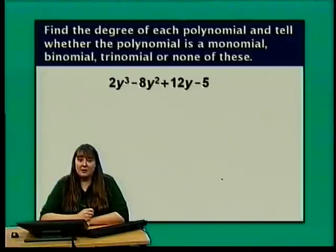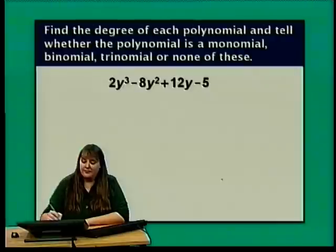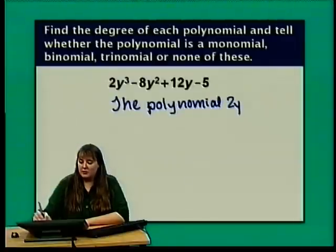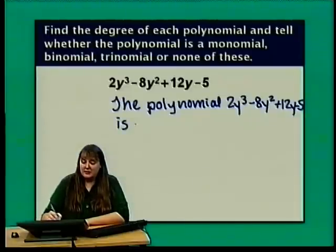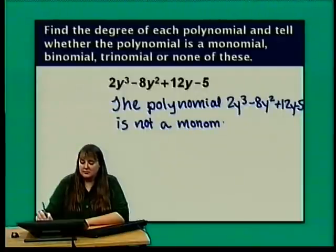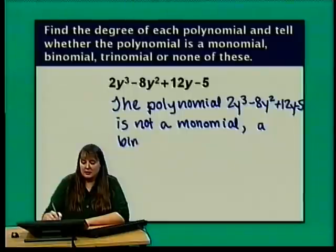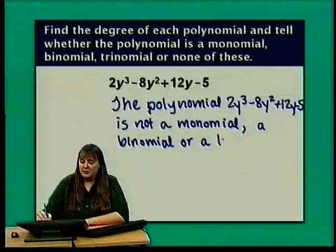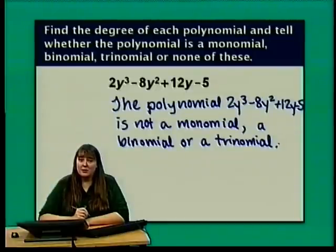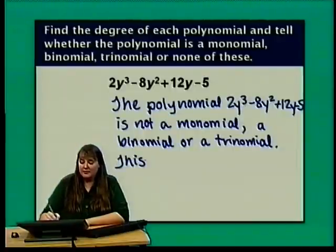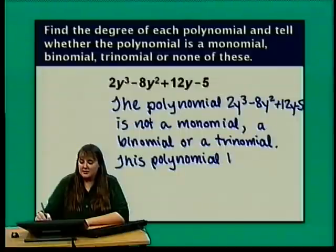The polynomial 2y cubed minus 8y squared plus 12y minus 5 has 4 terms, so it's not a monomial, binomial, or trinomial. The highest degree term is 2y cubed, so it's a third degree polynomial — sometimes called a cubic polynomial. This polynomial has degree 3.